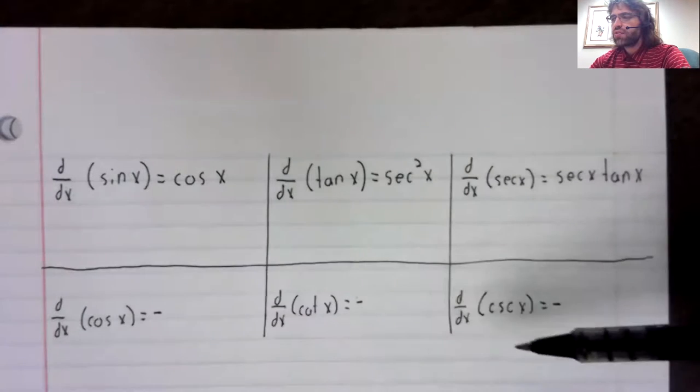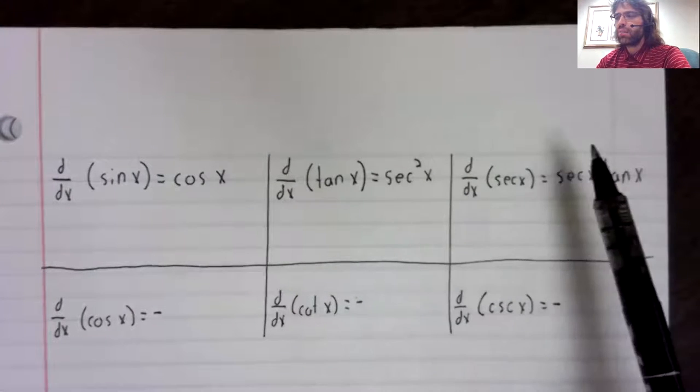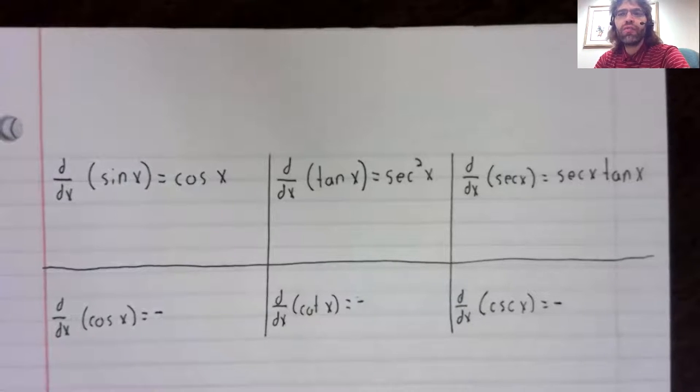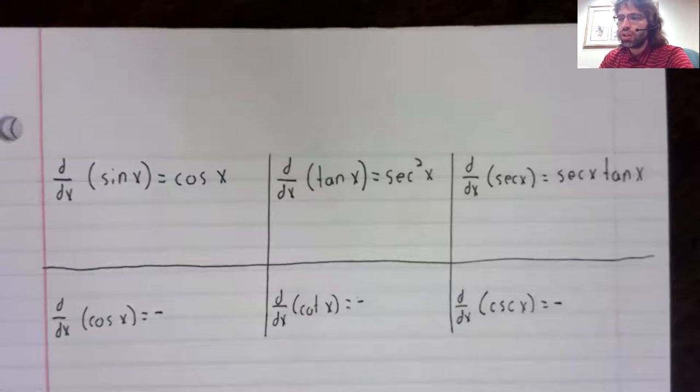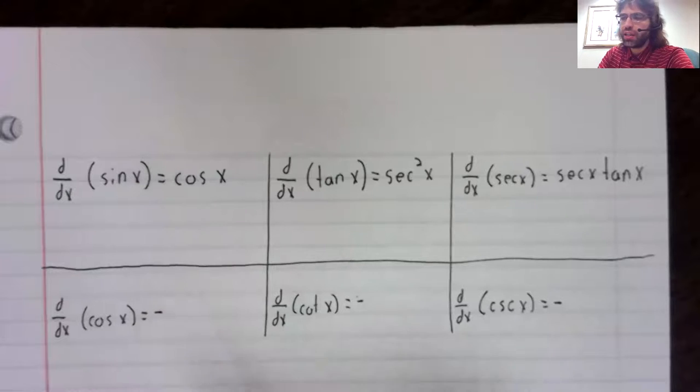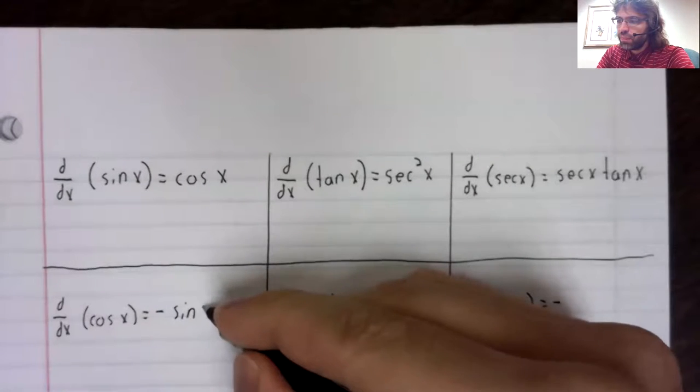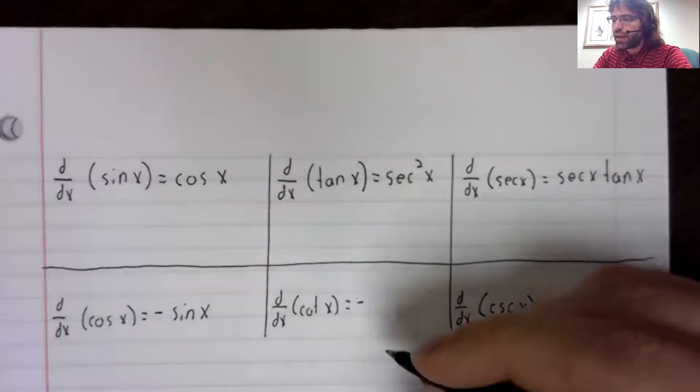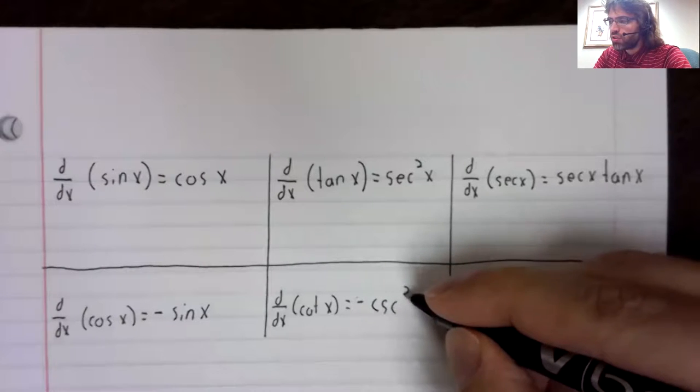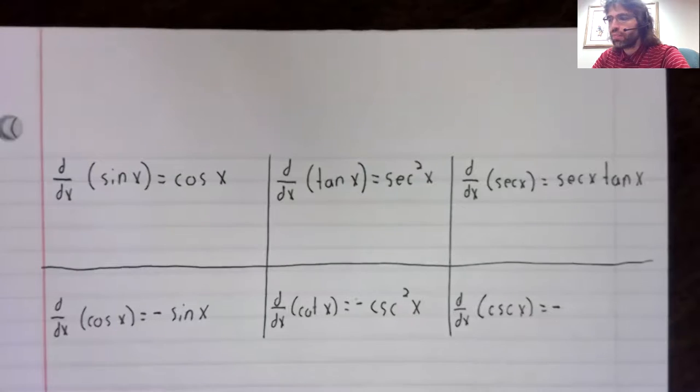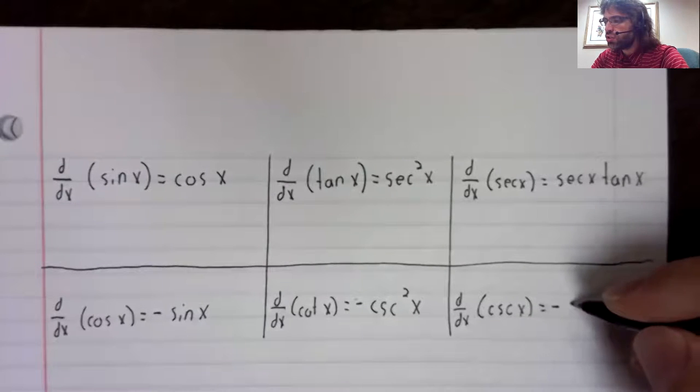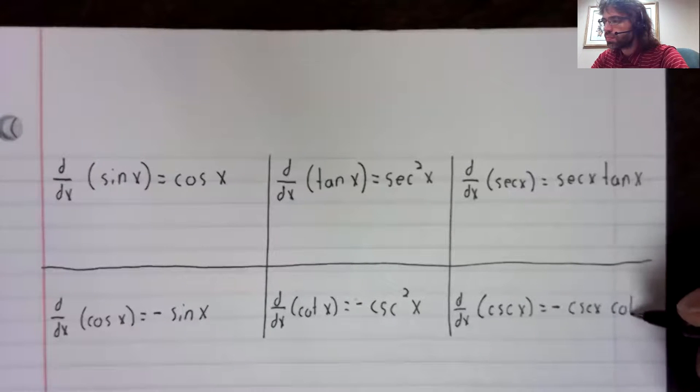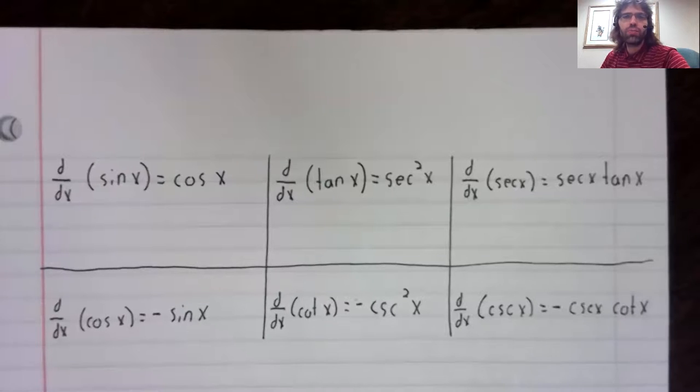What goes after the negative sign is similar to what we have up here. So the derivative of cosine: sine becomes cosine. The derivative of cotangent: secant squared becomes cosecant squared. The derivative of cosecant: secant times tangent becomes cosecant times cotangent.